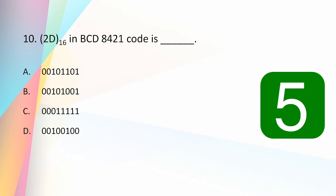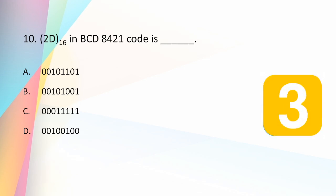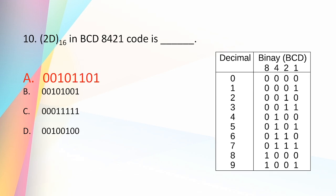2D base 16 in BCD 8421 code is: 00101101, 00101001, 00101001001, 00111001? The answer is 00101101. In BCD 8421 you represent each hexadecimal digit using 4 bits. So 2 is represented as 0010, and D means 13, which is 8+4+1 = 1101. Therefore the answer is 00101101.